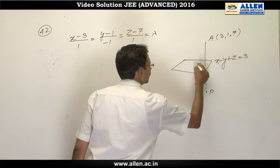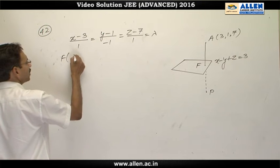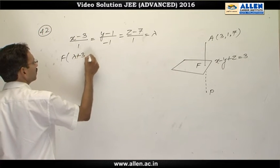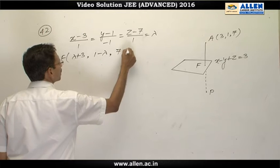First of all, we will calculate the foot of perpendicular capital F. Let's say it is (λ+3, 1-λ, 7+λ).